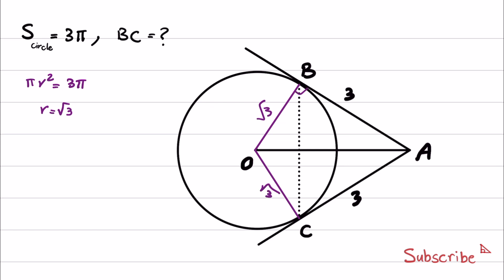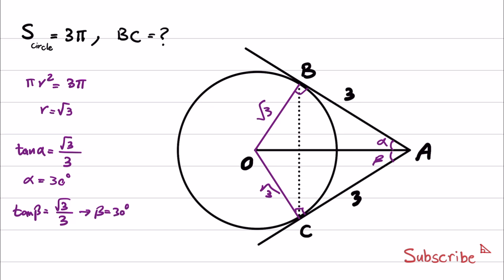We know the angles at B and C are right angles. If the angle at A toward B is alpha, then tan(alpha) equals opposite over adjacent, which gives alpha equal to 30 degrees. Similarly, tan(beta) equals square root of 3 over 3, so beta is also 30 degrees.